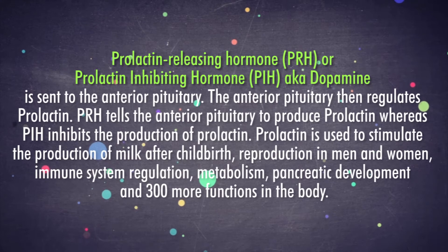Prolactin-releasing hormone, PRH, or prolactin-inhibiting hormone, PIH, also known as dopamine, is sent to the anterior pituitary. The anterior pituitary then regulates prolactin. PRH tells the anterior pituitary to produce prolactin, whereas PIH inhibits the production of prolactin. Prolactin is used to stimulate the production of milk after childbirth, reproduction in men and women, immune system regulation, metabolism, pancreatic development, and 300 more functions in the body.